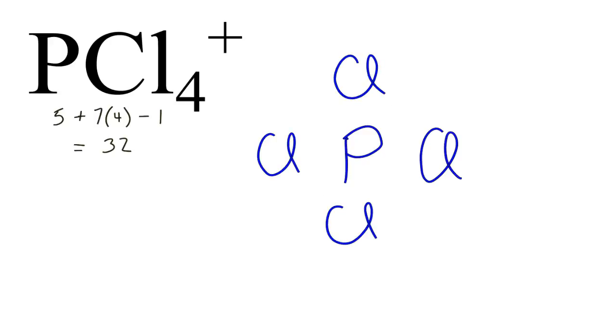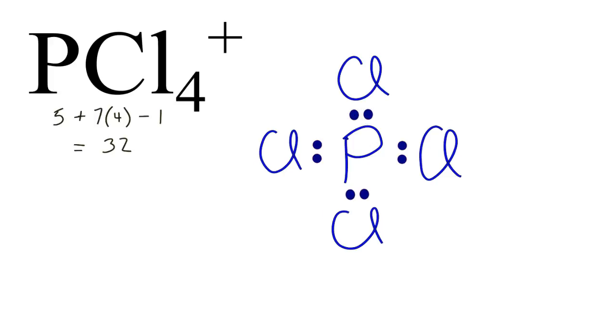Next, we'll place electrons between the atoms to form chemical bonds. We've used eight valence electrons at this point. We have 26 more.